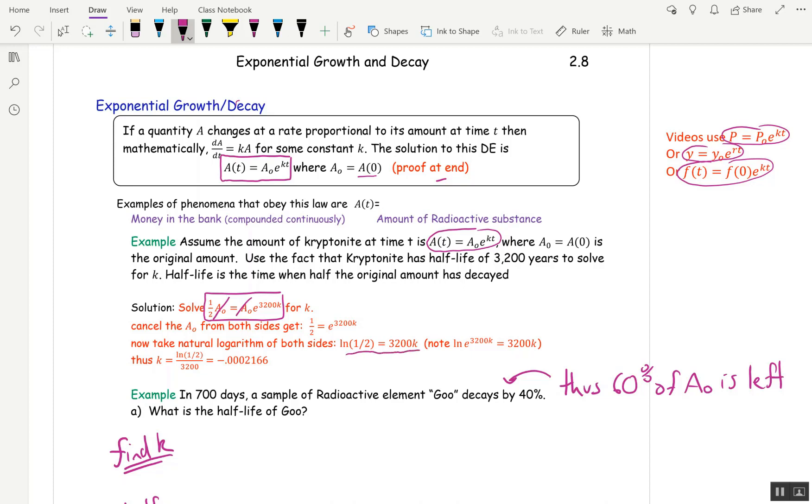And the reason you get this is because if I take natural log of a half, I get natural log of a half. And if I take natural log of e^(3200k), that's just 3200k because e and natural log cancel. So you don't have to show this step. You can jump right to the step I have here. Finally, to solve for k, divide both sides by 3,200. Now I suggest you leave things in exact form until you absolutely have to get a decimal to put it into your homework.